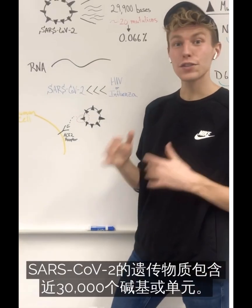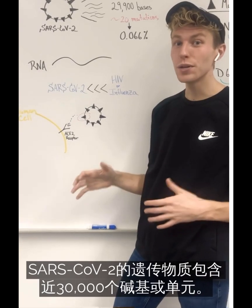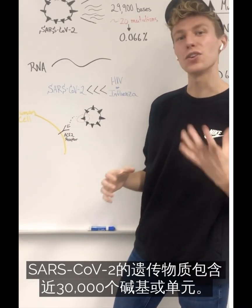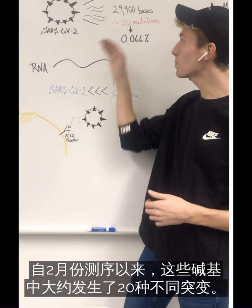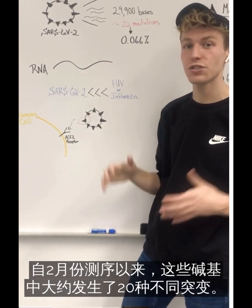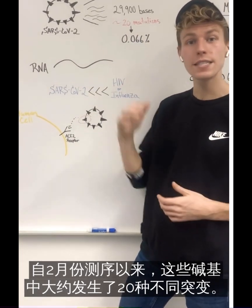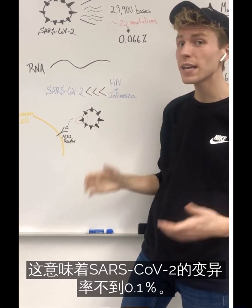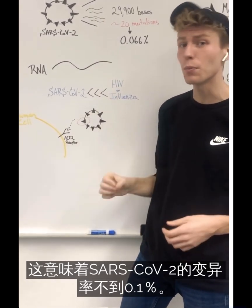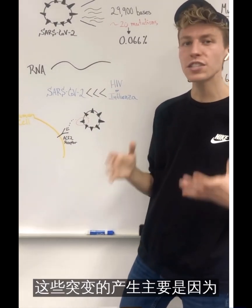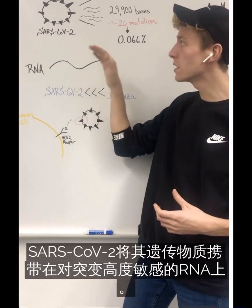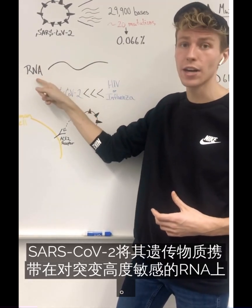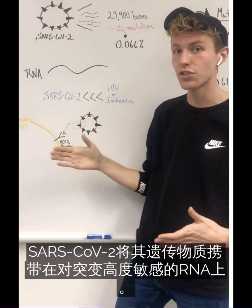The genetic material for SARS-CoV-2 is comprised of almost 30,000 bases, or units, and of those bases, there have been approximately 20 different mutations that have occurred since its sequencing back in February. This means that SARS-CoV-2 has mutated less than 0.1%. These mutations have primarily arisen because SARS-CoV-2 carries its genetic material on RNA, which is highly susceptible to mutations.